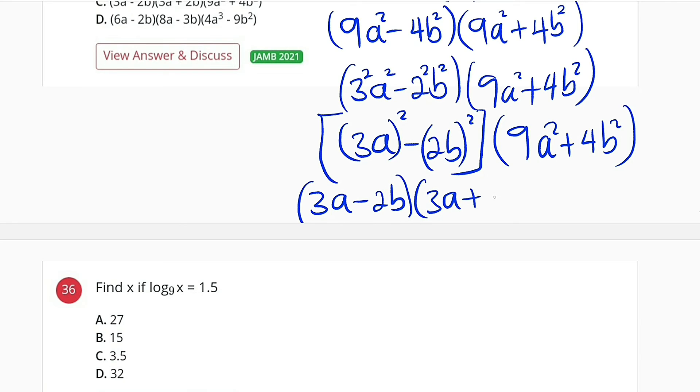The only difference is the sign 2b. Then finally we have 9a squared plus 4b squared. So this is the factorized form of what we are given.